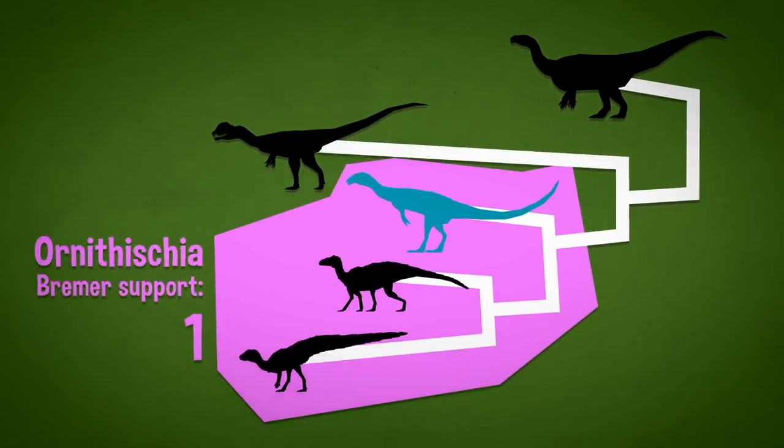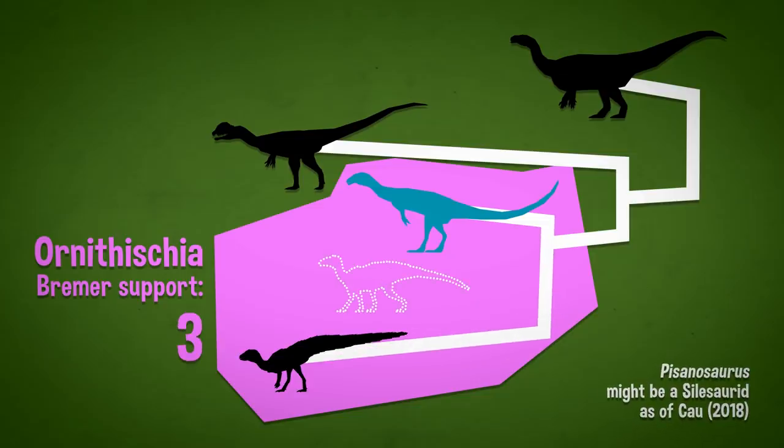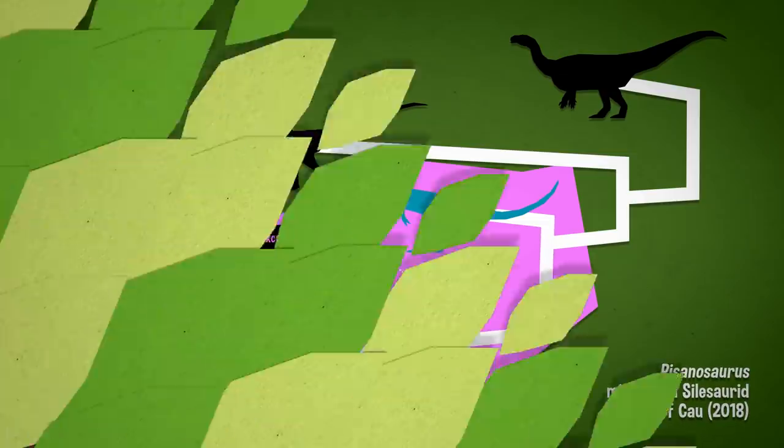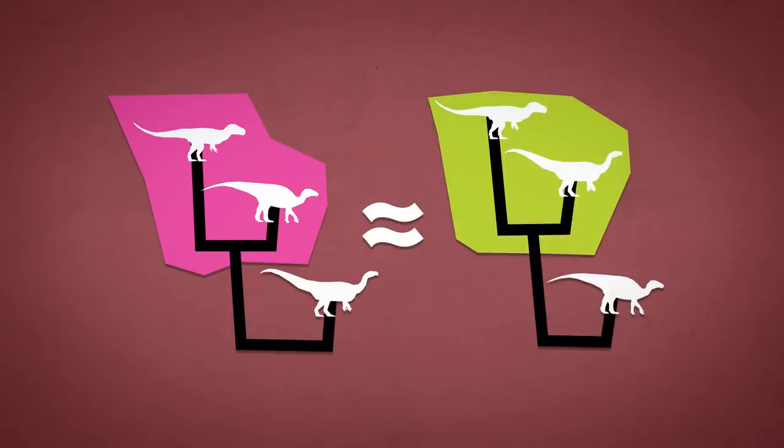Also, the Bremer support is relatively low, except when they remove Pisanosaurus from the matrix. All this back and forth shows that neither hypothesis really has much more statistical weight than the other.